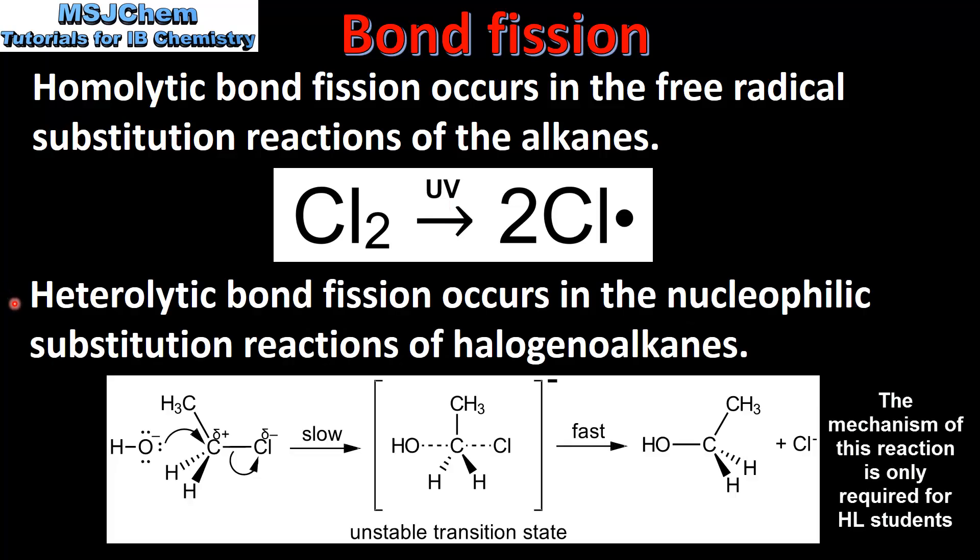Heterolytic bond fission occurs in the nucleophilic substitution reactions of the haloalkanes. So in this reaction the bond between the carbon and the chlorine atom breaks heterolytically. This results in the formation of a negative chloride ion which is also known as the leaving group.